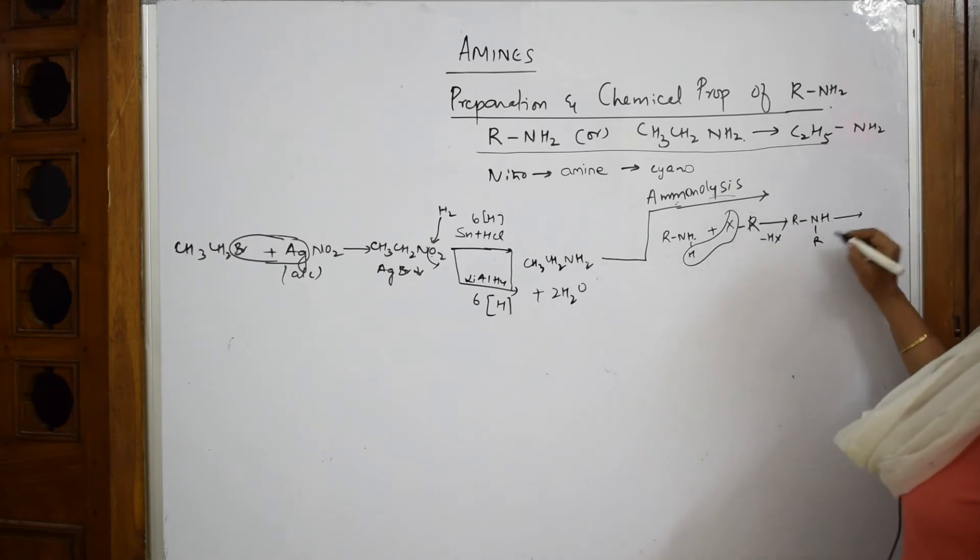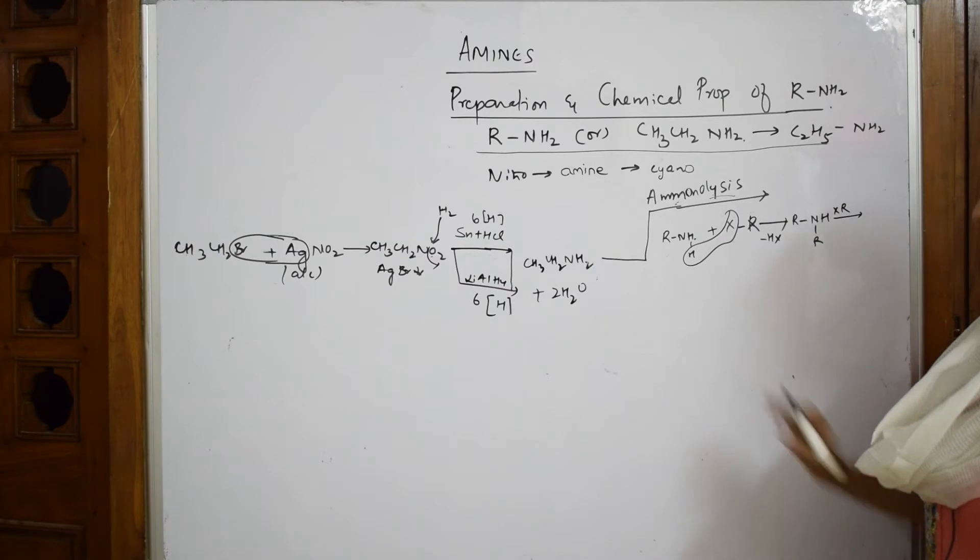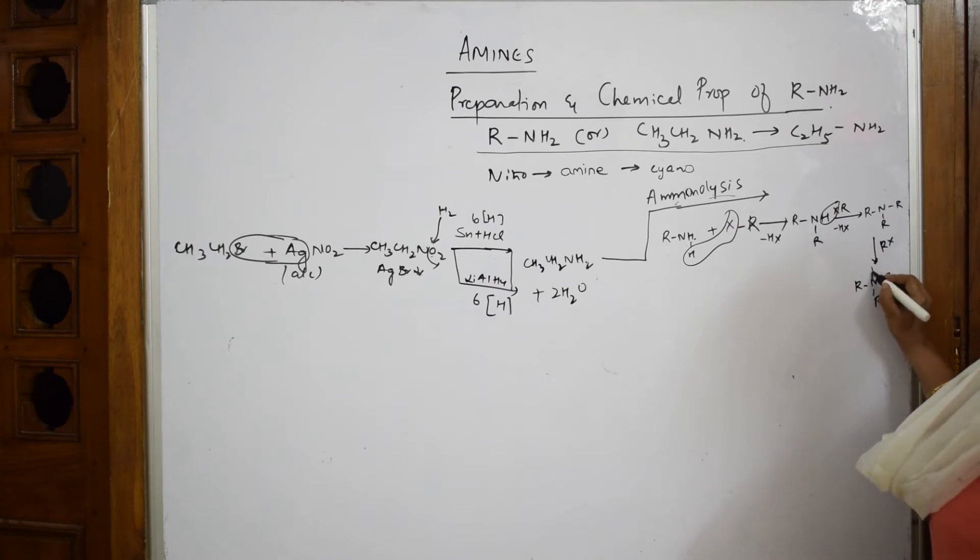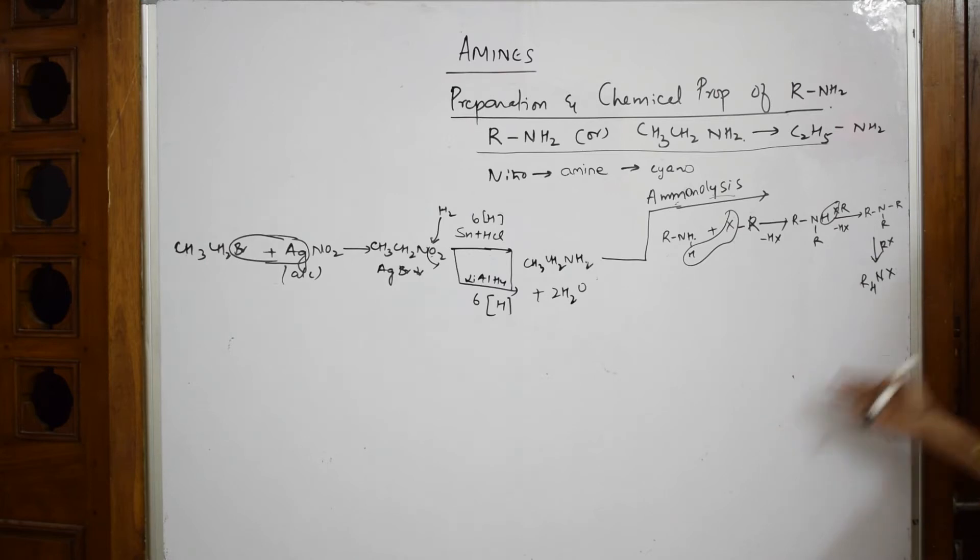Now to this I add one more RX. Another HX comes out and you get RNR with two R groups. Still one more RX combines. Where is this H to remove? It's going to add to the nitrogen forming R4NX, a quaternary ammonium salt. This is the main concept.